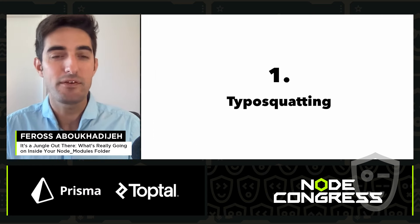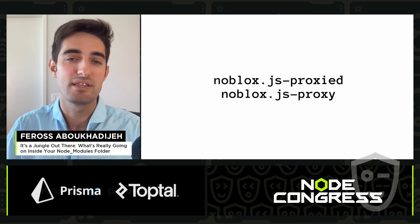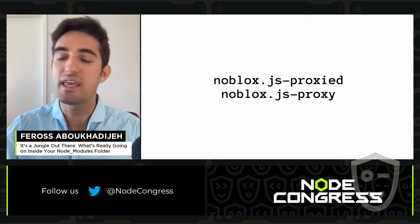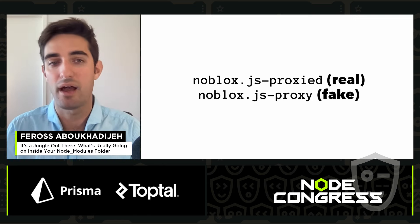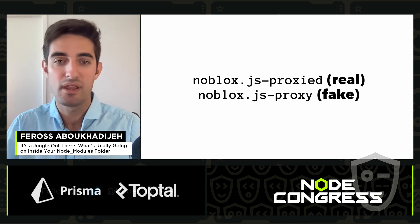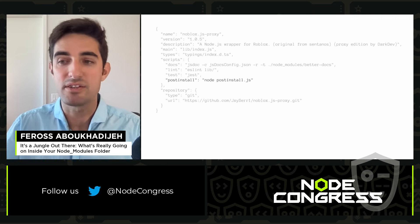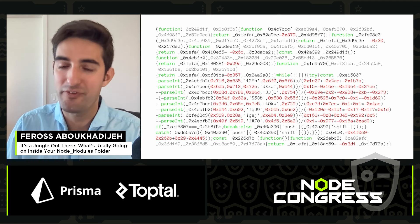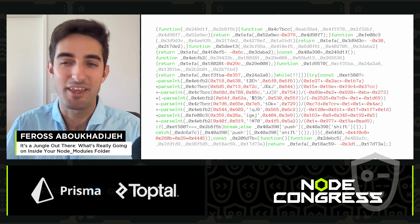The first and most common attack vector is typosquatting — when an attacker publishes a package with a very similar name to a legitimate and popular package. You can see two packages here with very similar names, one of which is malware, and it would be hard to know which without cracking them open. Opening up the malware package, you can see it's using an install script, which is a very common technique. If you open up the install script, the file is heavily obfuscated — and even without knowing exactly what the code is doing, you can bet it's not something you want to run on your machine.